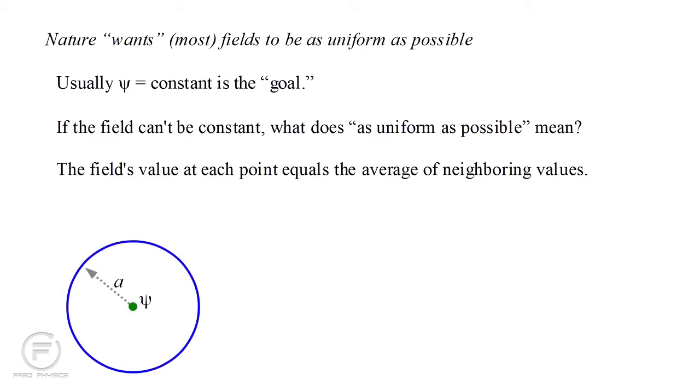Imagine the field psi at some point in three-dimensional space, and a small sphere of radius A surrounding that point. Call the average field value on the sphere psi average. Then equilibrium simply requires that psi equals psi average. This is so common in physics that we have a special symbol and operation, called the Laplacian, that measures the difference between psi average and psi.